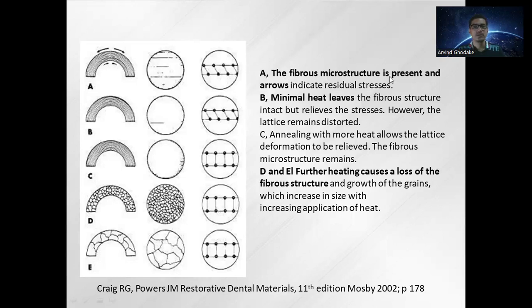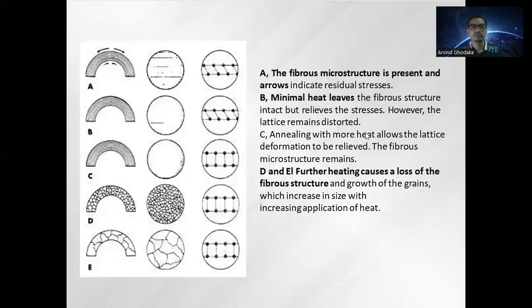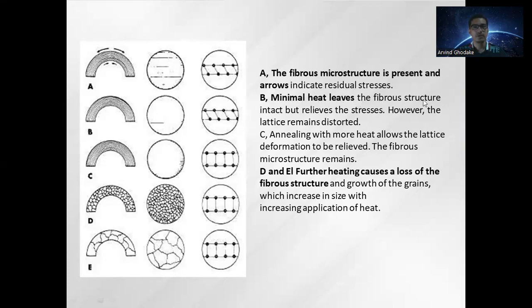The fibrous microstructure is present and arrows indicate residual stresses. In the diagram you can clearly see residual stresses induced in the material. On the outer side, tensile residual stresses are induced, and at the inner core region, compressive stresses are induced. In the PB diagram with minimum heat, the fibrous structure remains intact but stresses are relieved; however, the lattice remains distorted — structure remains the same but stresses are present.